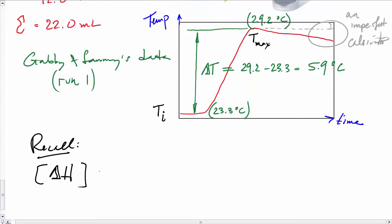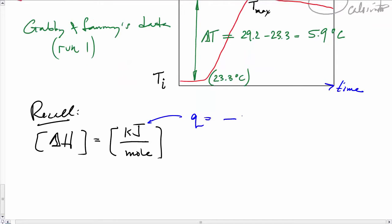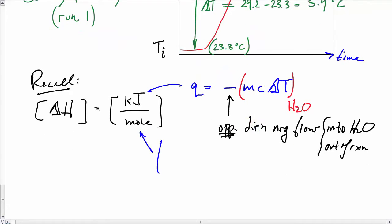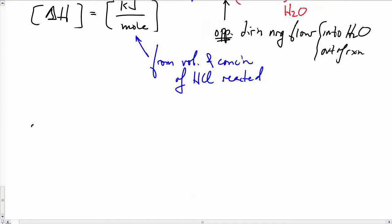Remember that the ΔH for our reaction has units of kilojoule per mole. Kilojoules here are the energy we get from the heat change—or rather, the heat that flowed into the water. We need an opposite sign because the heat that flowed into the water flowed out of the reaction. We'll get the number of moles from the volume and concentration. We'll use HCl for this one. So the enthalpy change, ΔH, will be -mcΔT/n, where n is the moles.